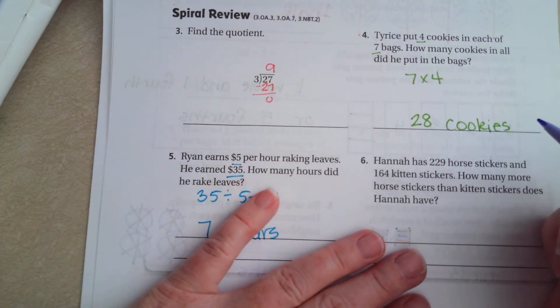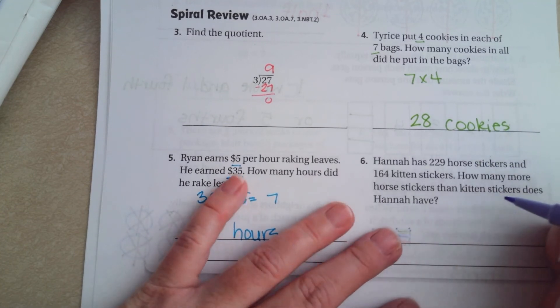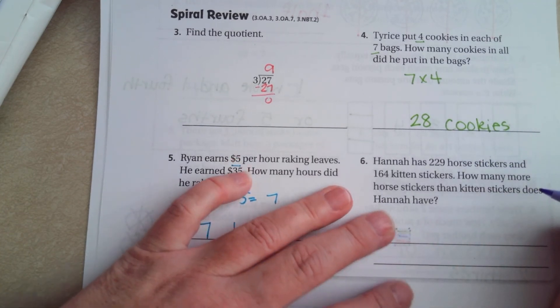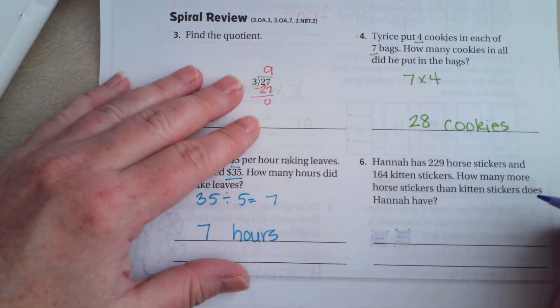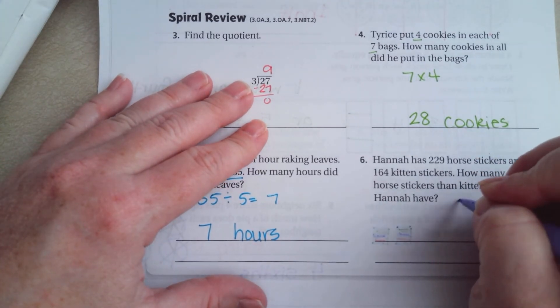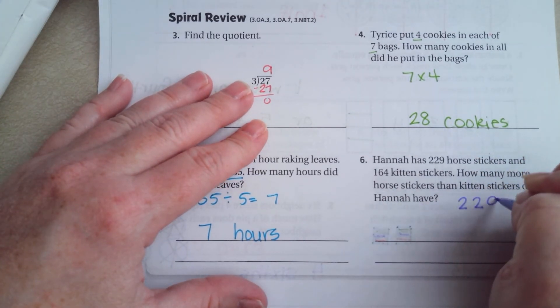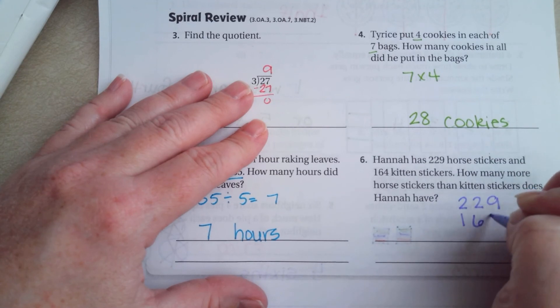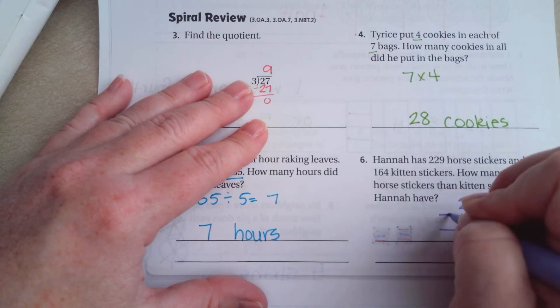Hannah had 229 horse stickers and 164 kitten stickers. How many more horse stickers than kitten stickers does Hannah have? So, in order to find the difference, we have to subtract.